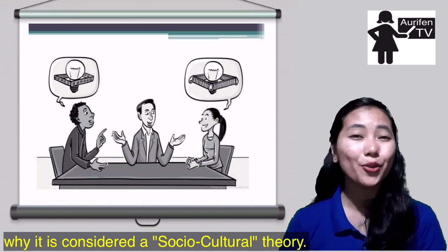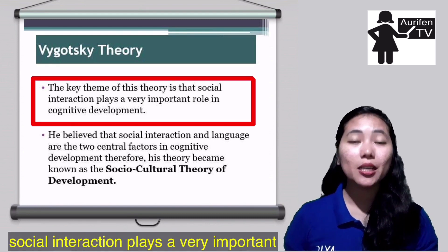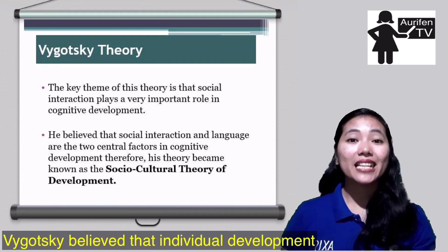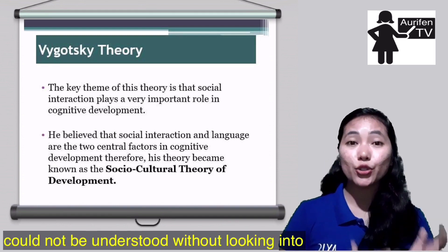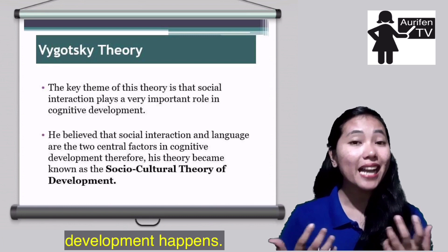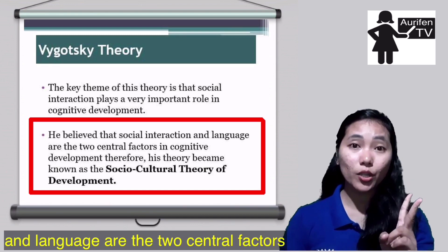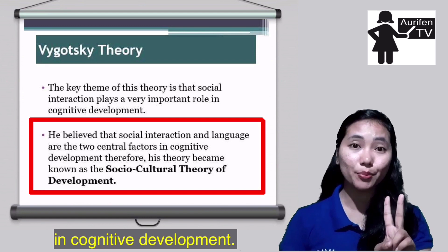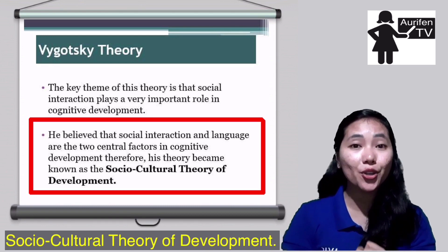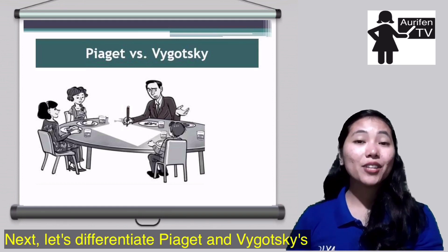Now let's talk about his theory and learn why it is considered a socio-cultural theory. The key theme of his theory is that social interaction plays a very important role in cognitive development. Vygotsky believed that individual development could not be understood without looking into the social and cultural context within which development happens. He strongly believed that social interaction and language are the two central factors in cognitive development, and therefore his theory became known as the socio-cultural theory of development.